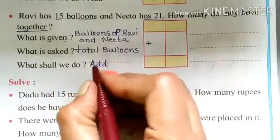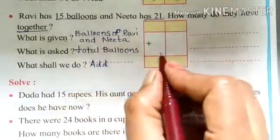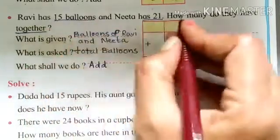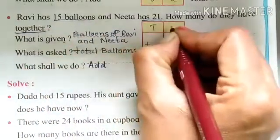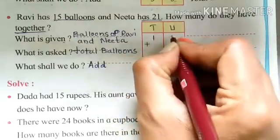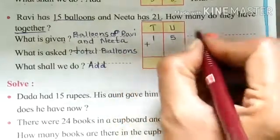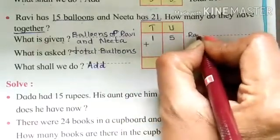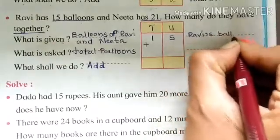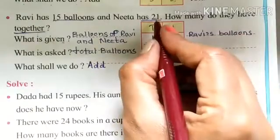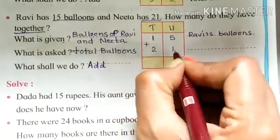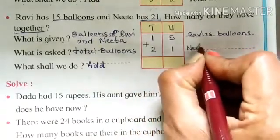Now in this given box we have to make, we have to do the actual addition. So let us start with 15 balloons. Here we have to write T for tens, U for units. 1 ten, 5 units, that is 15. Whose balloons are that? This is Ravi's balloons. Plus 21, 2 tens, 1 unit, 21, Nita's balloons.